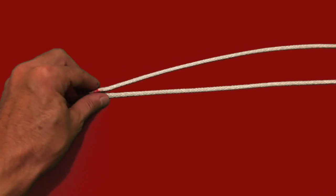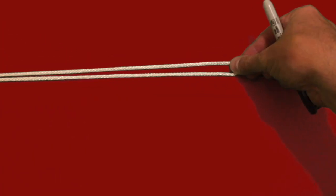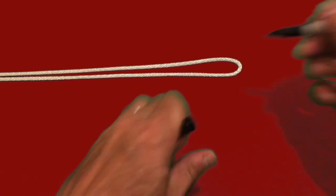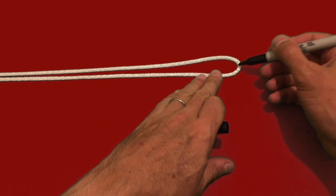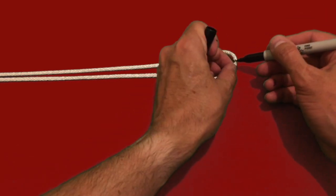Take your line with the ends taped to prevent fraying and find the midpoint, then get your Sharpie pen and put on our first mark which indicates the top of the shackle.